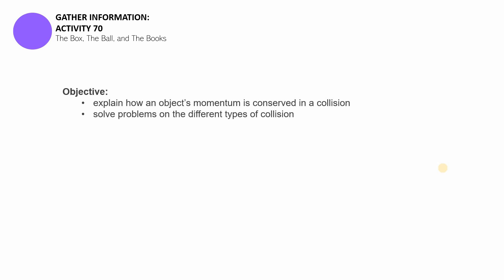The objectives of this activity are as follows. By the end of this activity, you can explain how an object's momentum is conserved in a collision and then you should be capable of solving problems on different types of collision. Now, for the materials, you'll be needing the following. A piece of paper, a basketball ball, a pencil, several books, and a cardboard box.